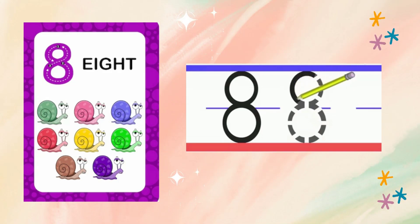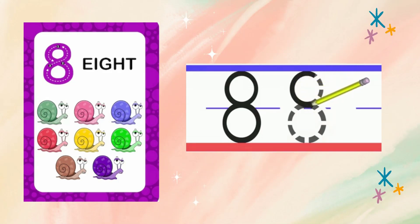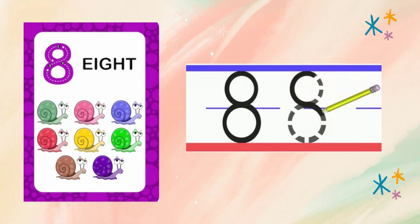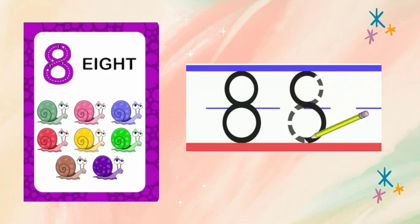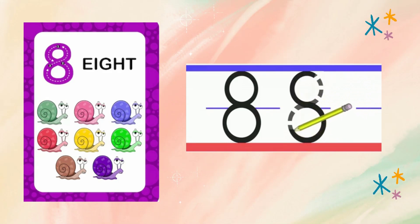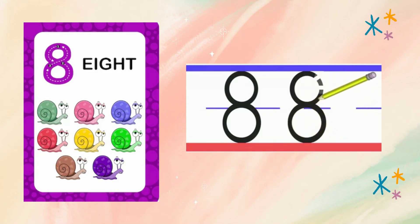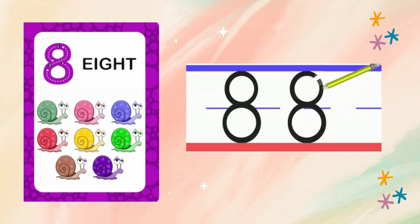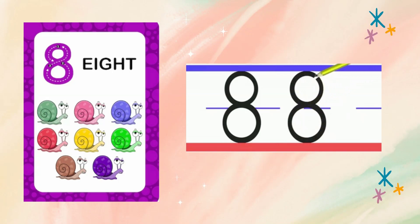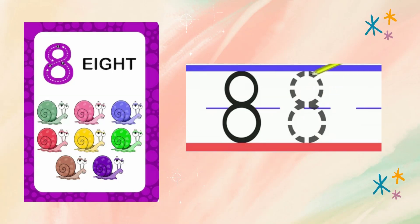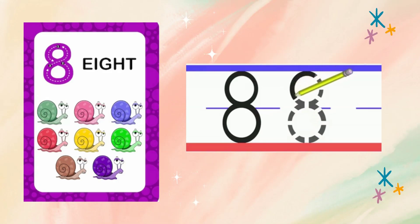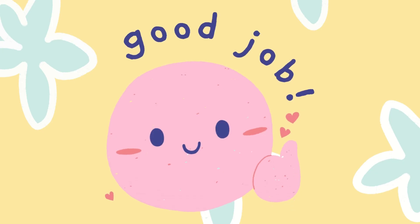To write number 8, we will start at the top and do a curved line to the middle. Then we will do a curved line the other way to the bottom. Curve around back to the middle and do a curved line. Good job, kids.